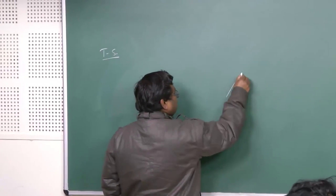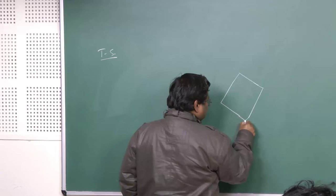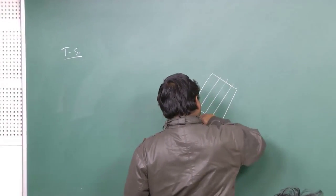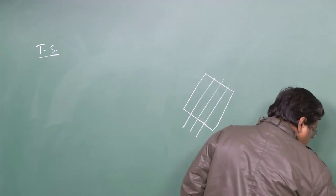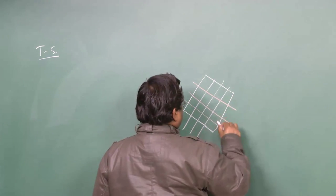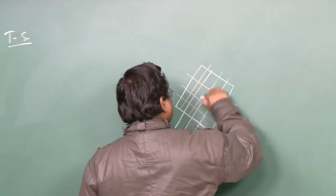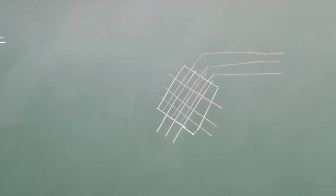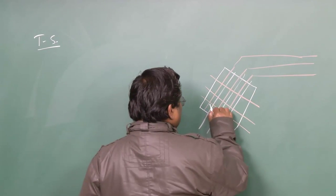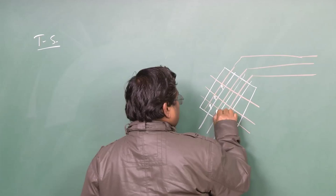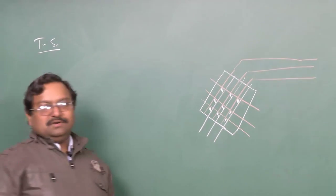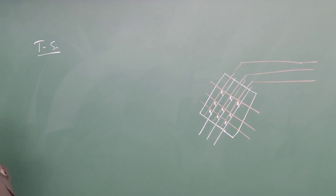So let us take a time-space switch. Obviously I require a space switch, so I am taking a 3 by 3. These are the 3 outgoing ports — that is the space part done so far. These white lines are the control lines; they will control the cross-points — whether a cross-point is on or not will be governed by these. Interestingly, I do not require a separate row and column control the way it was in the crossbar.